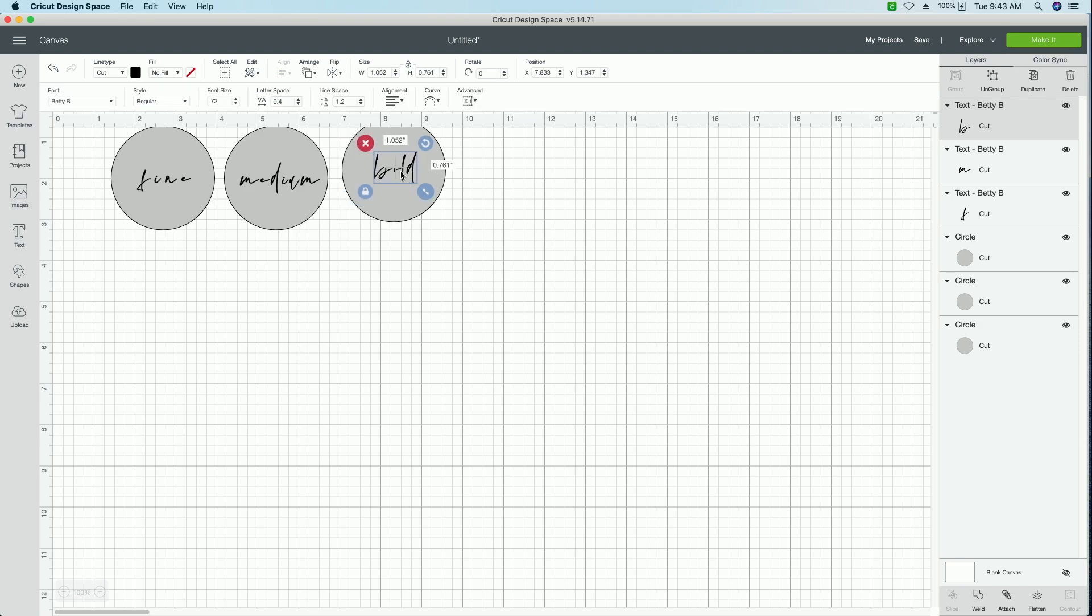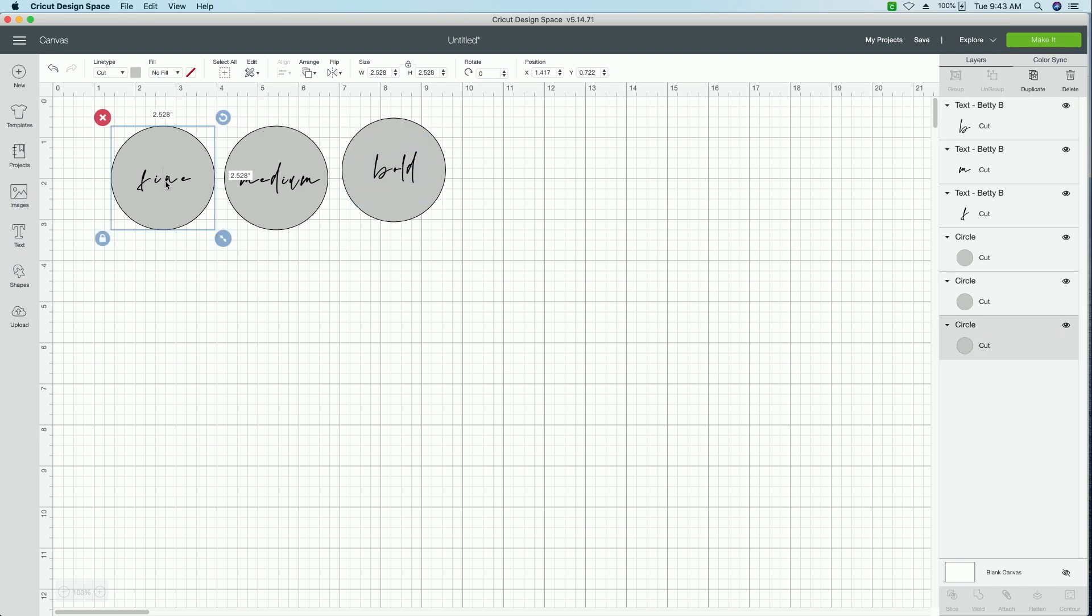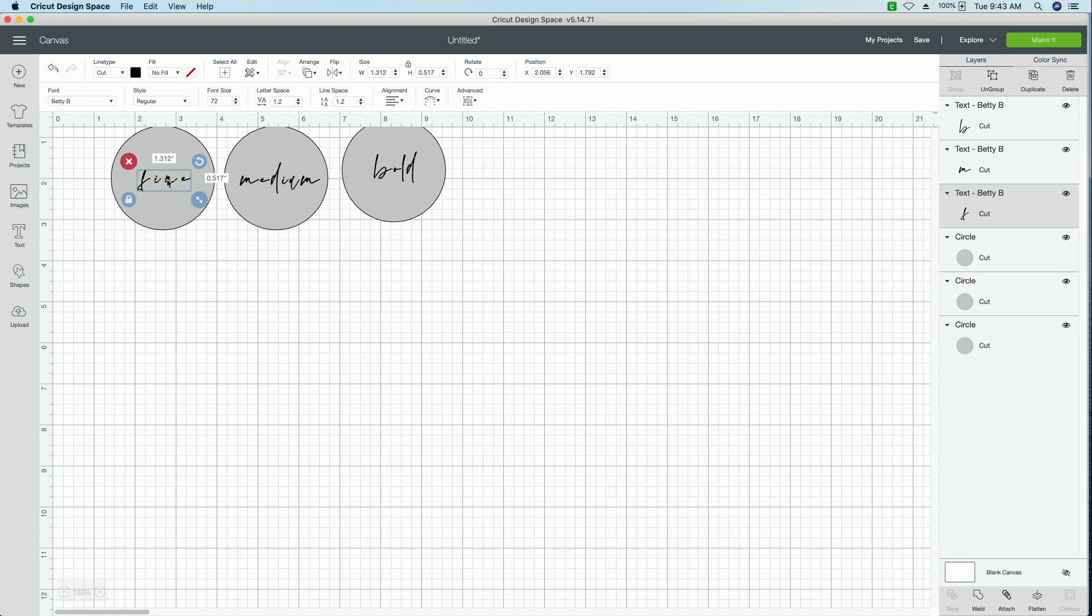And then the only thing that I need to do is change these lines from cut lines to the foil line. So with each text box selected individually, I'm going to go up to line type, and then I'm going to press fine or foil. And then for this one, I'll select the fine. Then for the medium one, I am going to select medium. And for the bold, I will, you guessed, select bold. So we've got that.